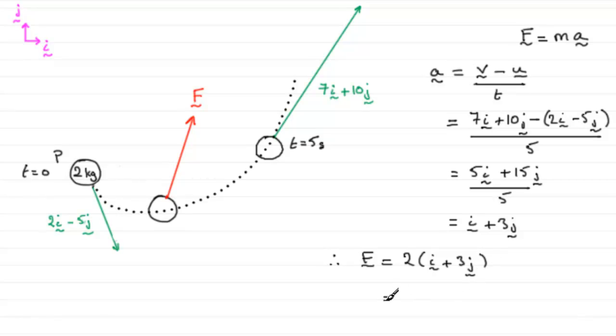And, therefore, if we just open this up, expand the bracket, we get 2i plus 6j. And there's your force F in the form ai plus bj. All right?